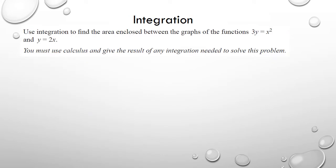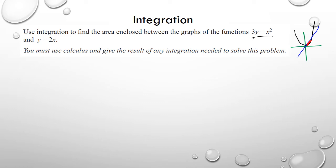Next question we have integration: use integration to find the area enclosed between these two graphs. One of the things I'd ask you guys to do is always draw a rough sketch, just so you can have a picture of what's actually happening. So I've got y equals x squared — that's a parabola — and y equals 2x, which is a straight line. I'm trying to find the area between the graphs. My first step is to figure out the two intersection coordinates, x1 and x2.